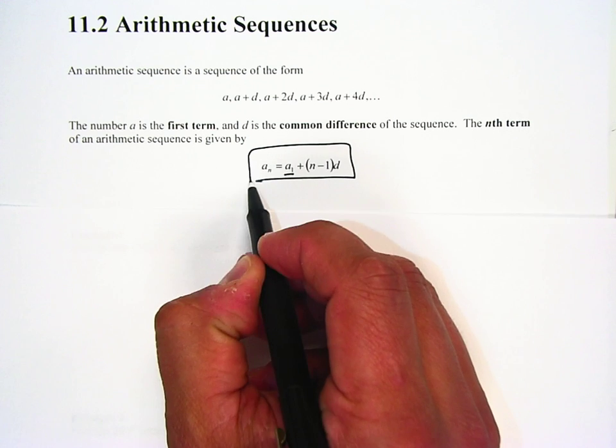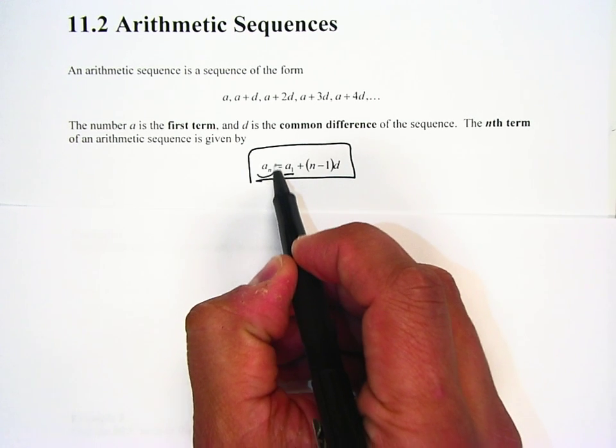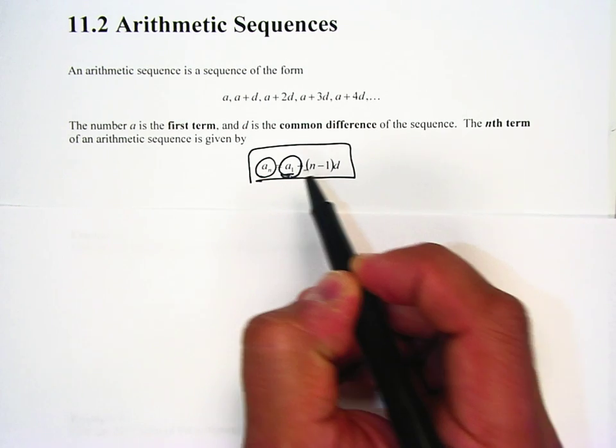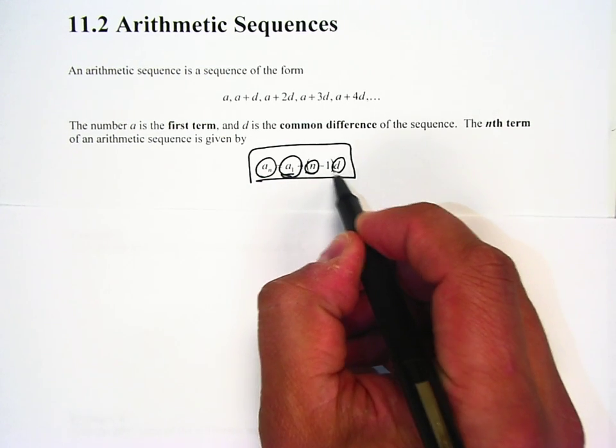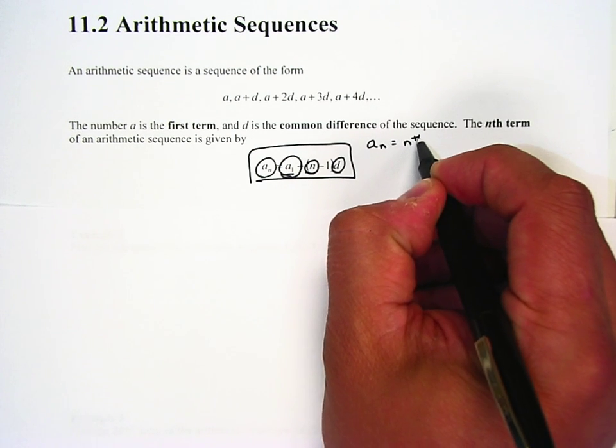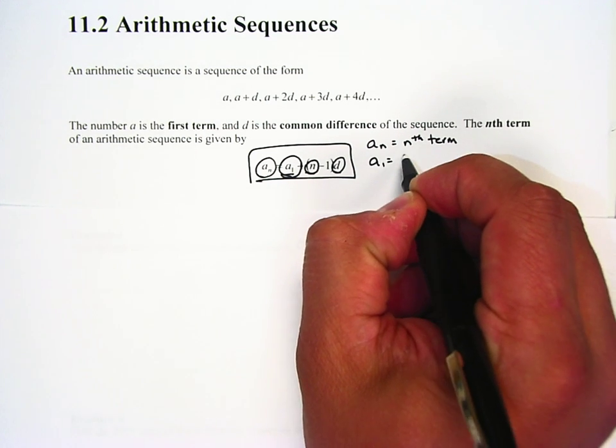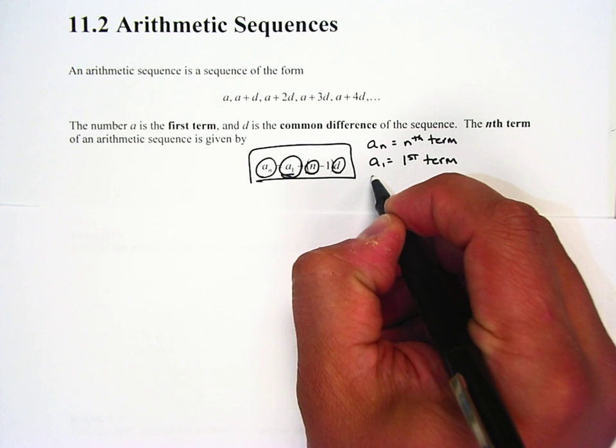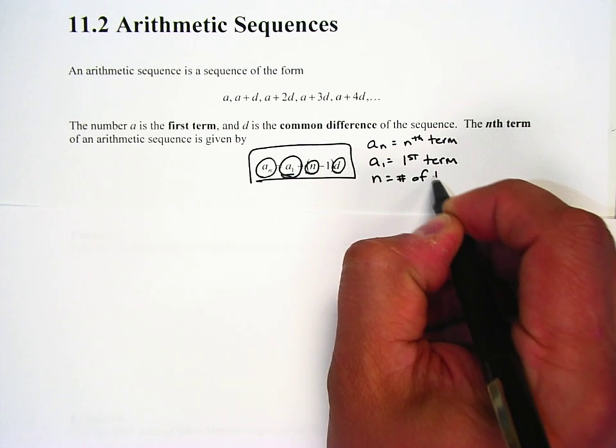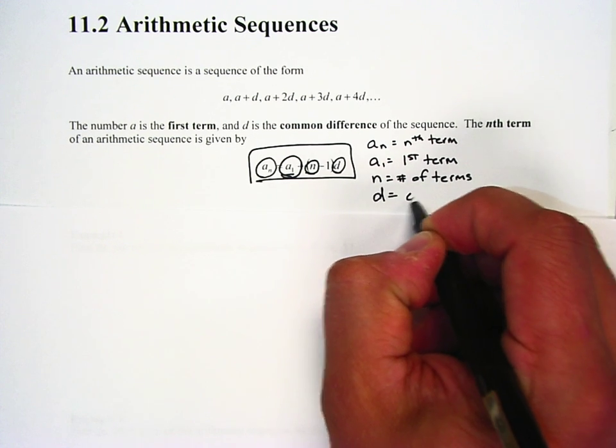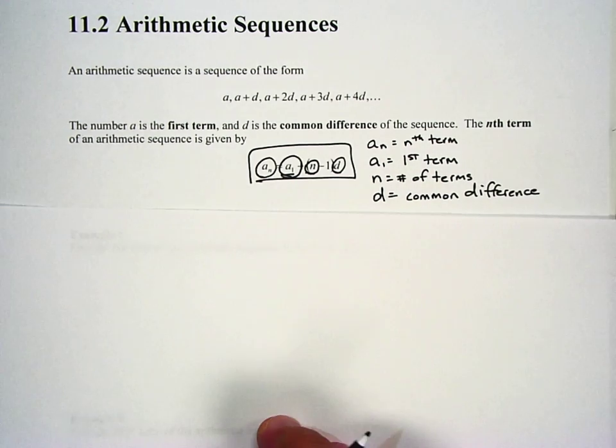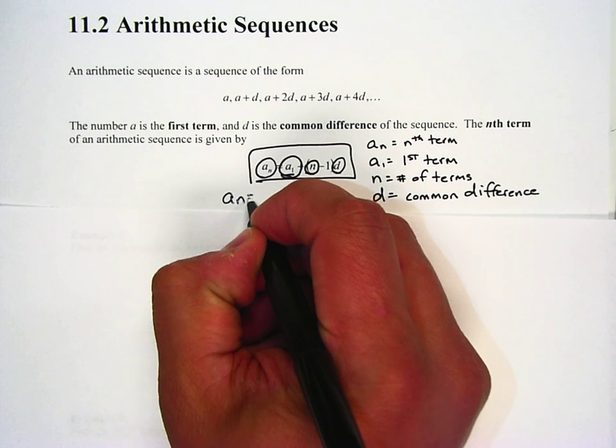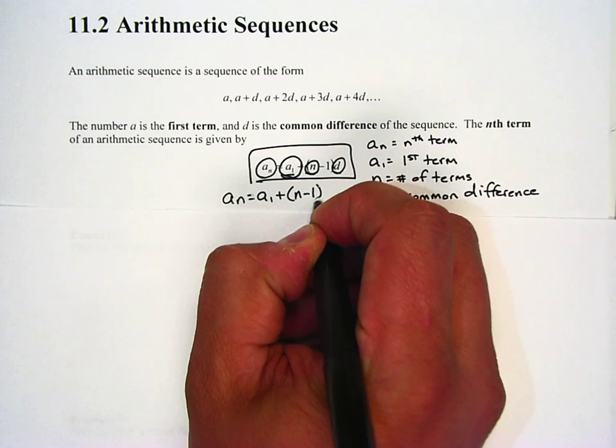And the nth term of the arithmetic sequence is given by this formula. And this formula, like I said, is very important. We need to make sure we know what's going on. There's four variables here. There's a sub n, which is the nth term. There's a sub 1, which is the first term. n, which is the number of terms, and d is the common difference. And again, common difference is going to be positive unless we were subtracting to find new terms. So just to write that down again, it's a sub n equals a sub 1 plus n minus 1 times d.